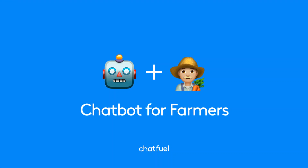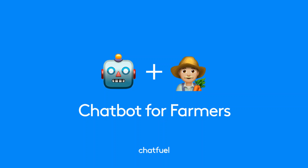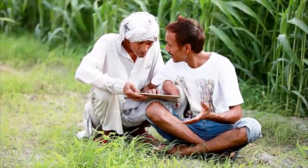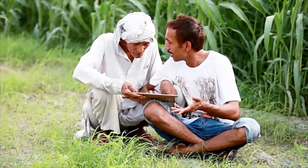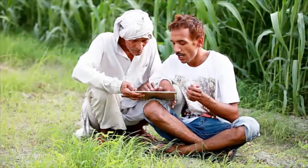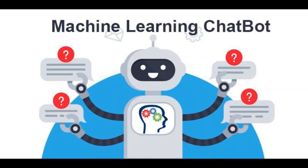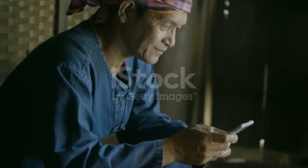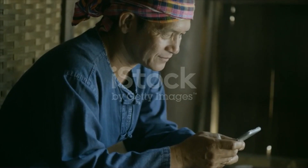Thus, to address this alarming situation, we have come up with an idea to create an intelligent chatbot that can assist our farmers by providing suggestions and solutions to their agricultural problems. Our chatbot model will be trained using ML and AI techniques with PyTorch on the KCC dataset, which will enable the bot to understand natural language and interact with humans.